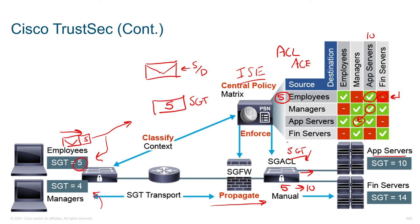The way we read this matrix is: sources come in on the left, and destinations are across the top. If I created a new group, say HR, that group would add one row and one column to the matrix. This will happen for each group that we create.